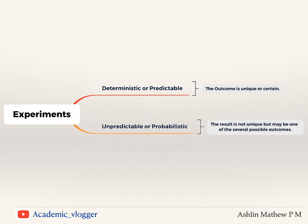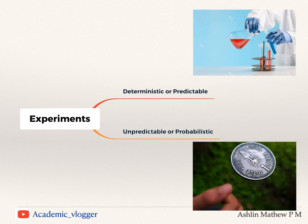We have already come across both these experiments in our life. We have done many laboratory experiments in our schooling. We know the perfect gas equation and Ohm's law, and we know even before doing the experiment what the answer is going to be. So such experiments are said to be deterministic or predictable.